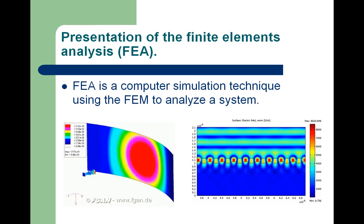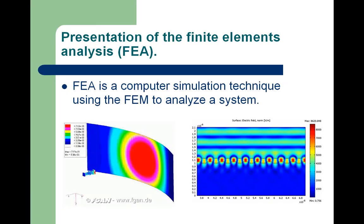While being an approximate method, the accuracy of FEA can be improved by refining the mesh in the model using more elements and nodes. A common use of FEA is for the determination of stresses and displacements in mechanical objects and systems. It can also be used in heat transfers, fluid dynamics, and electromagnetism, as we are going to see.